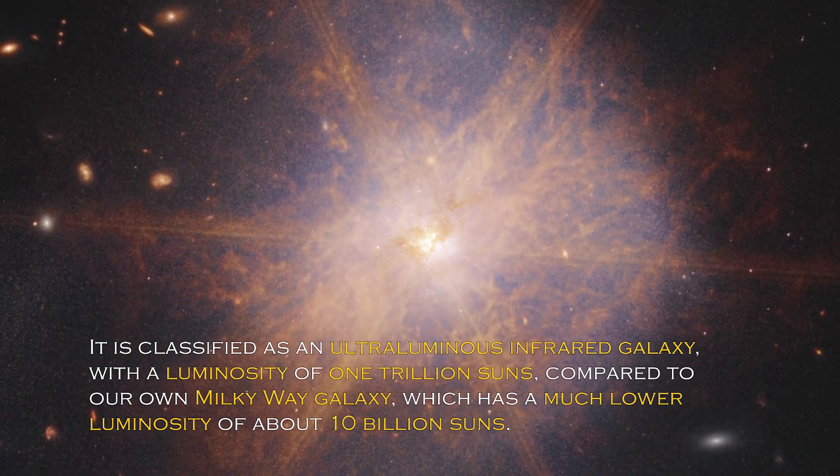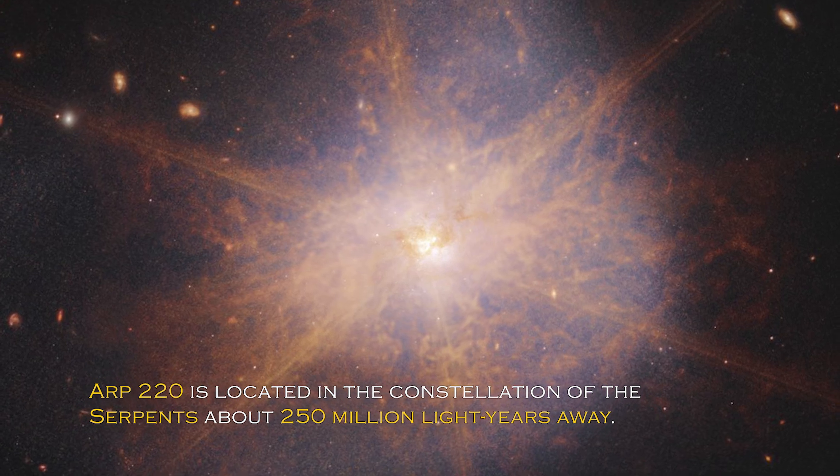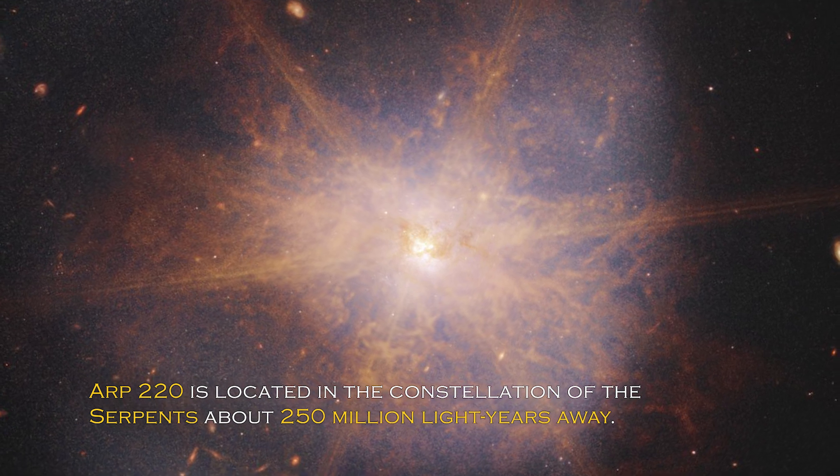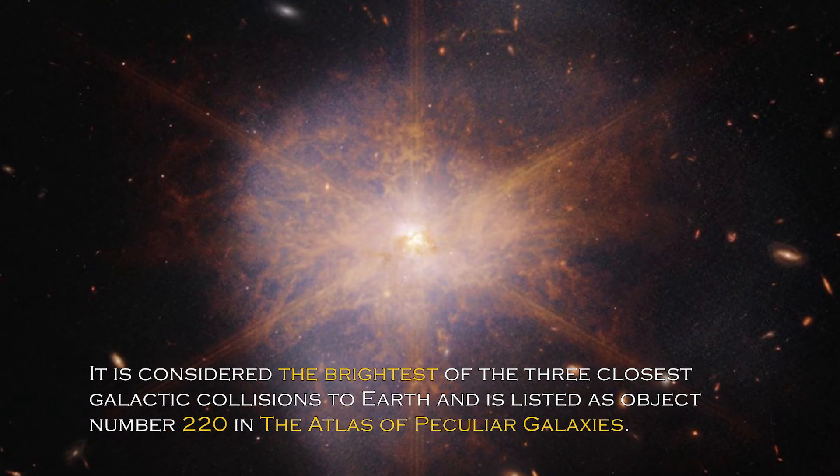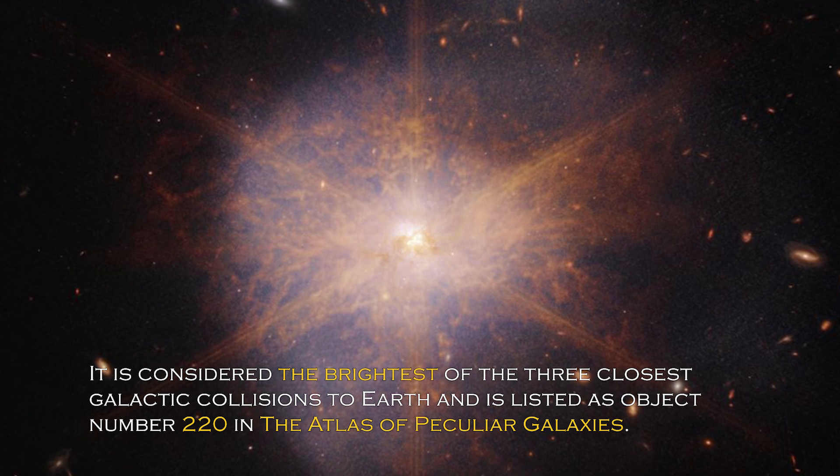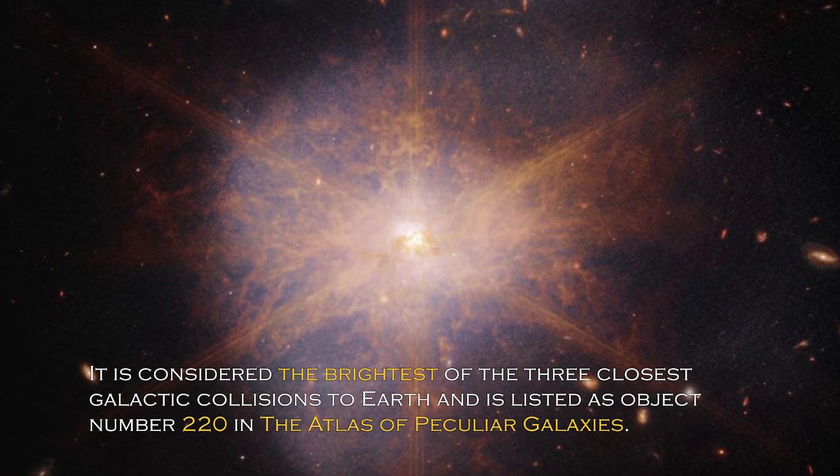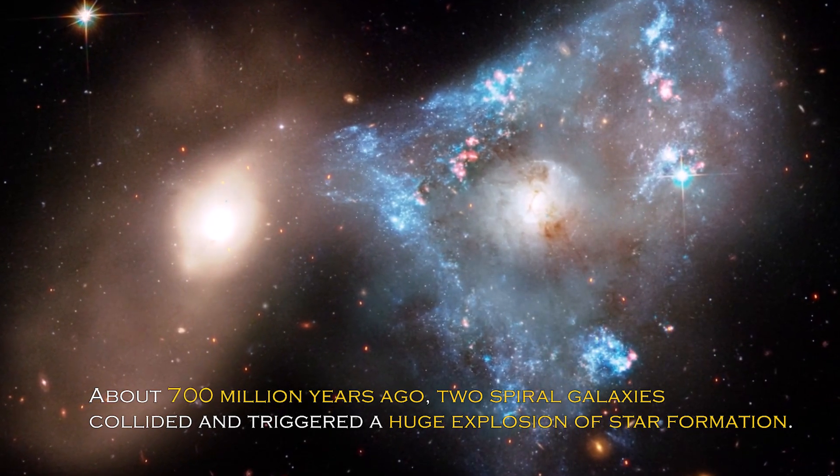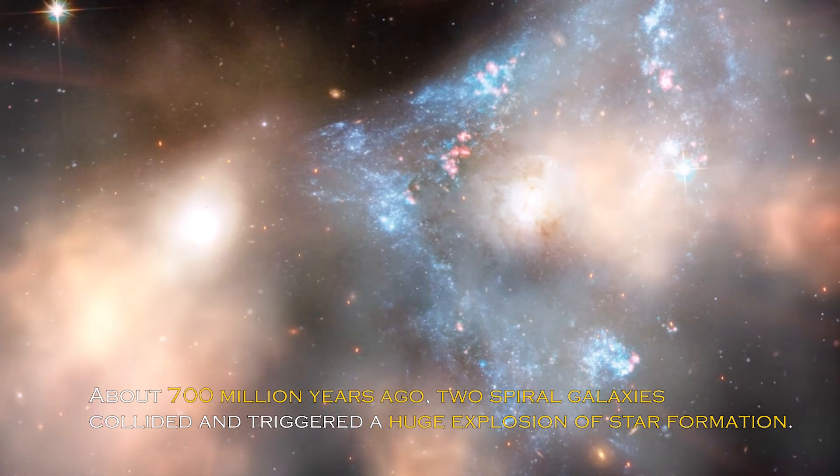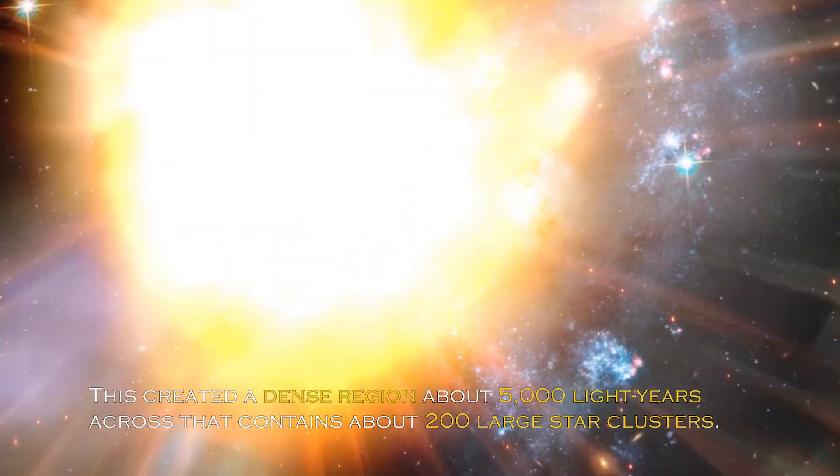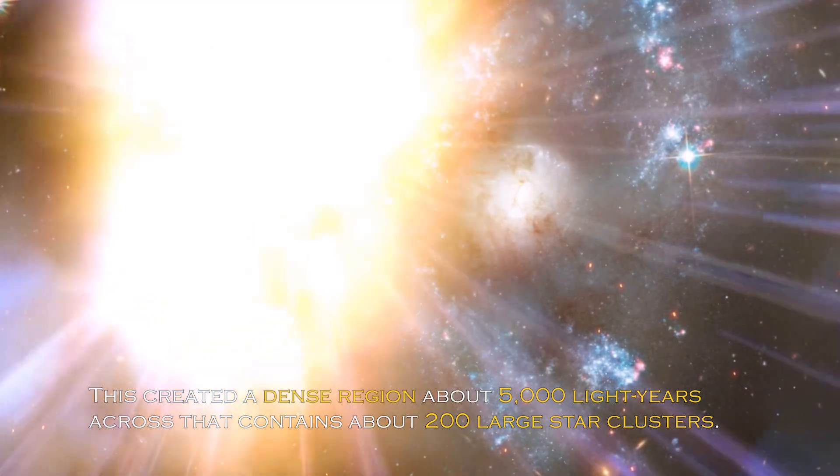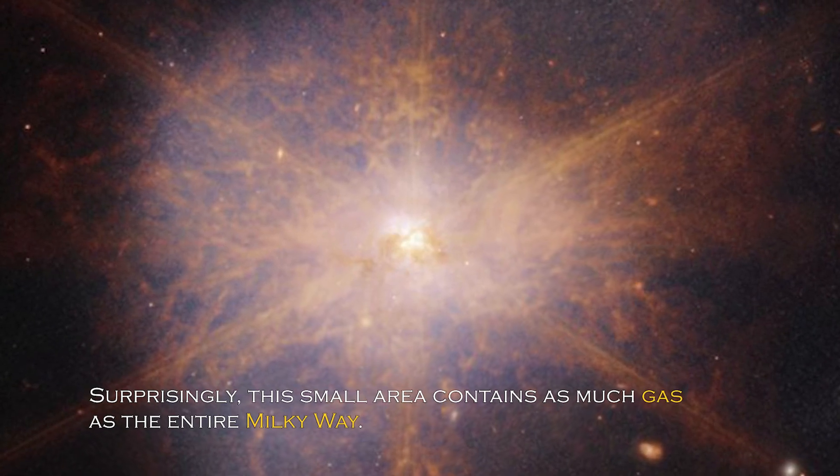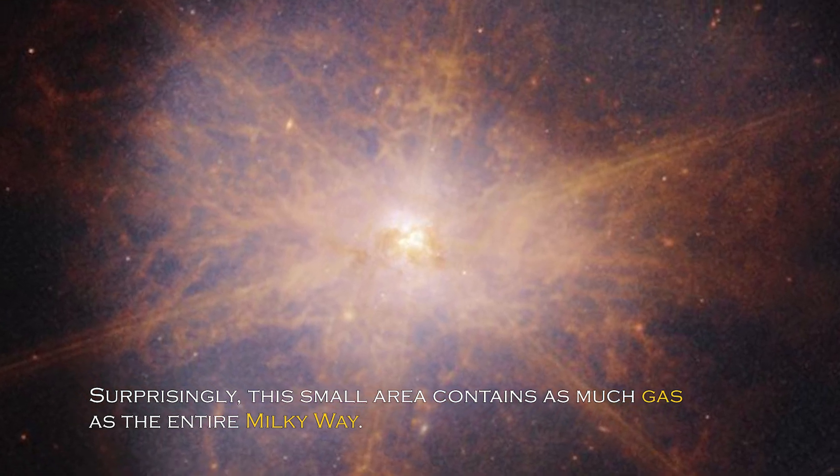ARP 220 is located in the constellation of the Serpents, about 250 million light-years away. It is considered the brightest of the three closest galactic collisions to Earth, and it is listed as object number 220 in the Atlas of Peculiar Galaxies. About 700 million years ago, two spiral galaxies collided and triggered a huge explosion of star formation. This created a dense region about 5,000 light-years across that contains about 200 large star clusters. Surprisingly, this small area contains as much gas as the entire Milky Way.